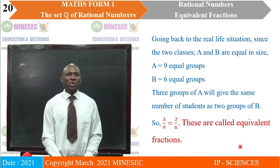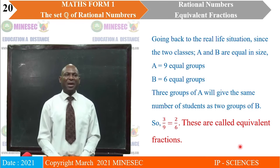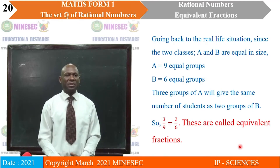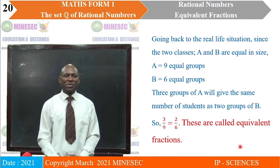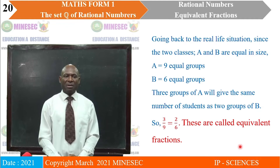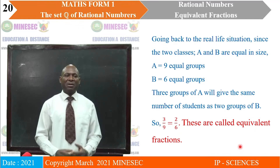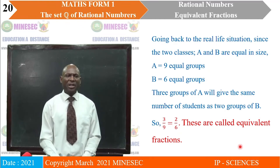Going back to the real-life situation: since the two classes A and B are equal in size, A has 9 equal groups and B has 6 equal groups. Three groups of A will give the same number of students as 2 groups of B. So 3 on 9 equals 2 on 6. These types of fractions are called equivalent fractions — fractions that give the same size. Fractions of the same quantity are called equivalent fractions.